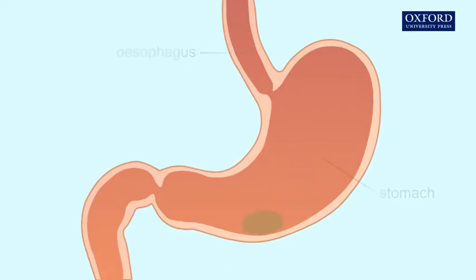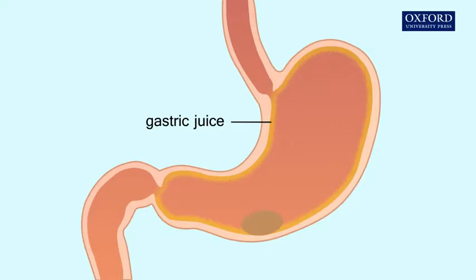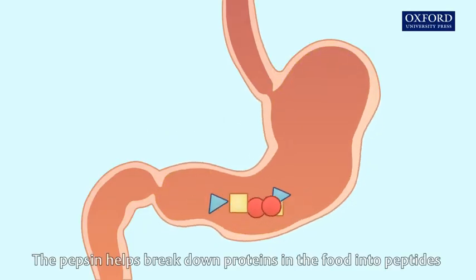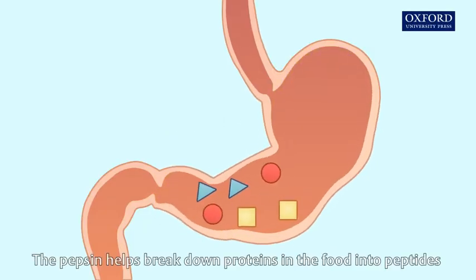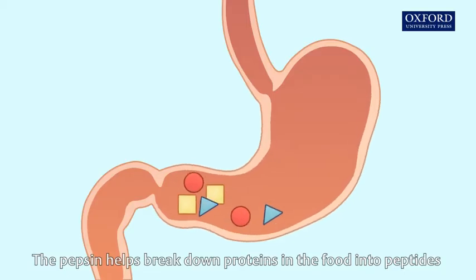In the stomach, the gastric glands produce gastric juice that contains pepsin. The pepsin helps break down proteins in the food into peptides.